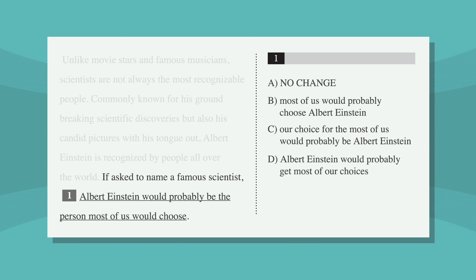Let's work through this problem together. We'll start by reading the question again: 'If asked to name a famous scientist, Albert Einstein would probably be the person most of us would choose.' Who's being asked to name a famous scientist? The way the sentence reads, it seems like Albert Einstein is being asked to name a famous scientist. That's what the sentence says, but not what it means to say. Here we have a classic case of a misplaced modifier. Our answer choice should begin with 'us' or a similar word or phrase, so let's cross off answer choice A and answer choice D.